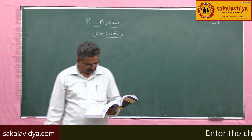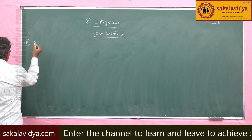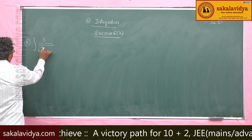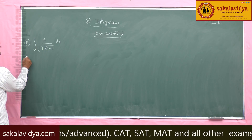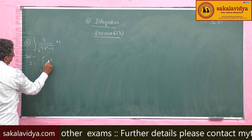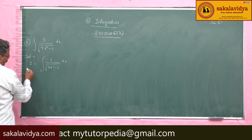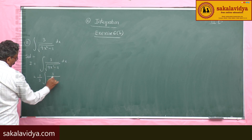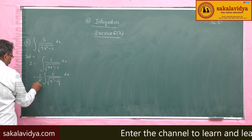Problem 11: Evaluate the integral of 3 divided by the square root of 9x² minus 1, dx. Solution: I equals integral of 3 over root(9x² - 1) dx. Take 9 common, giving 3 times (1/3) integral of 3 over root(x² - 1/9) dx. The 3s cancel.